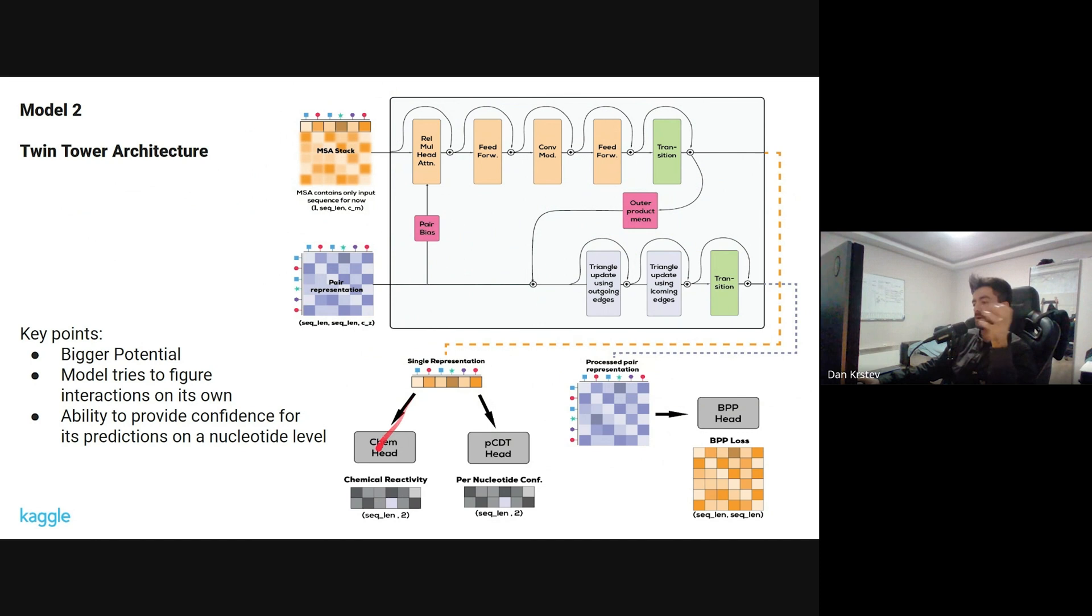From the single representation, we can gather chemical reactivity predictions. We can also gather per-nucleotide confidence, so for each nucleotide we can gather how confident our model is. And for the pair representation, we can use it as a way to recreate the base pair matrices and in that way gather the useful information without explicitly biasing the model like in the attention scores.